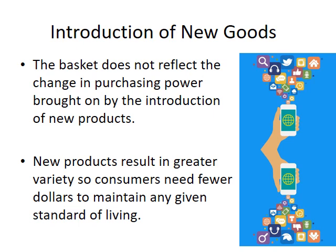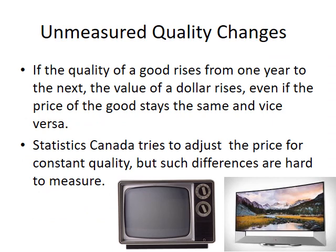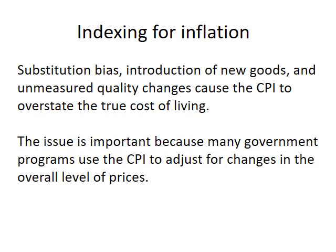New goods bring greater variety and versatility, meaning your dollar takes you further. Unmeasured quality changes are also a problem — if the quality of a good rises from one year to the next, the value of a dollar rises even if the price stays the same. Stats Canada tries to adjust for constant quality, but such differences are hard to measure. Together, substitution bias, introduction of new goods, and unmeasured quality changes cause CPI to overstate the true cost of living.